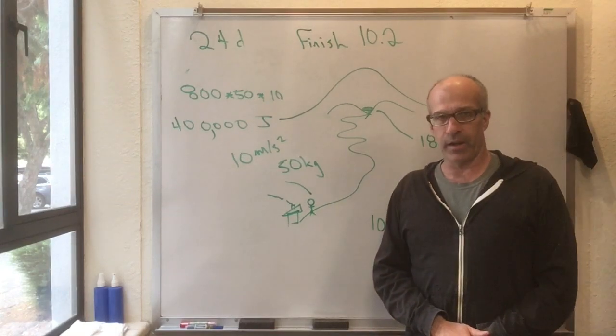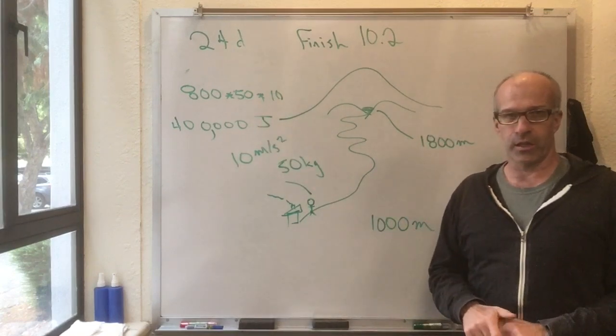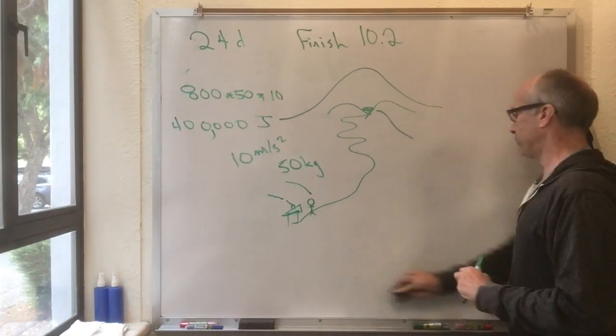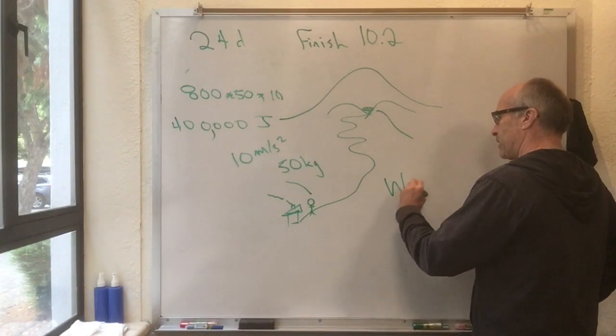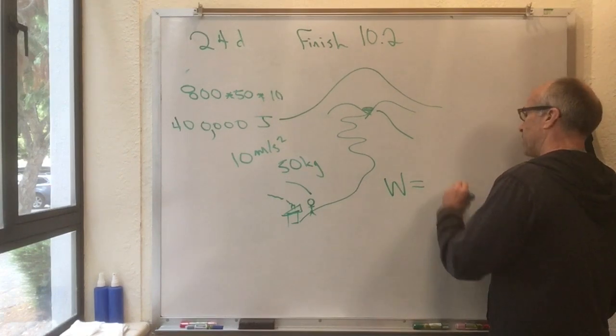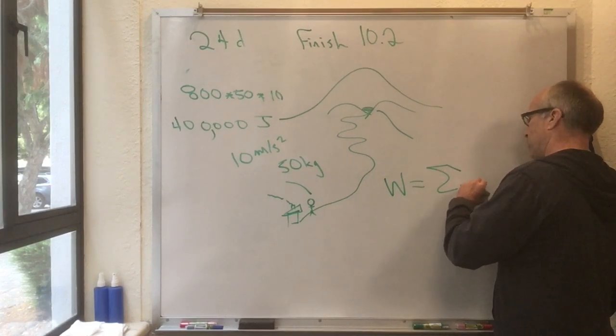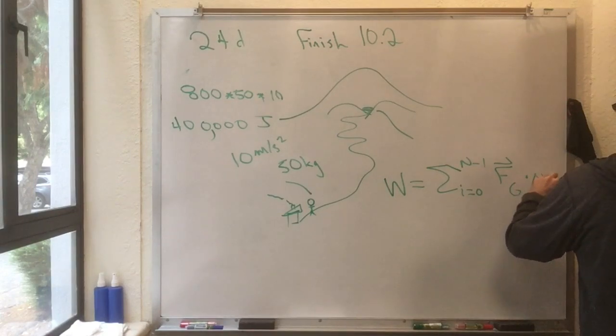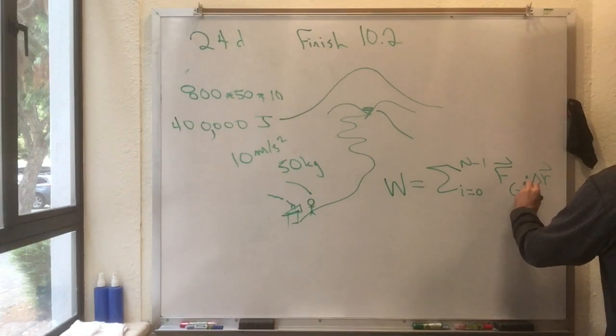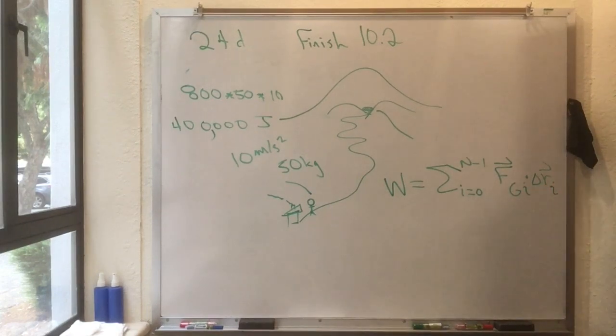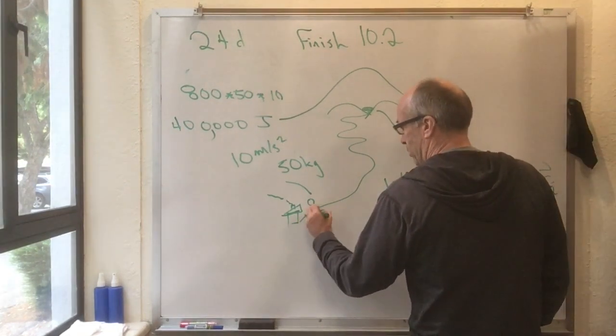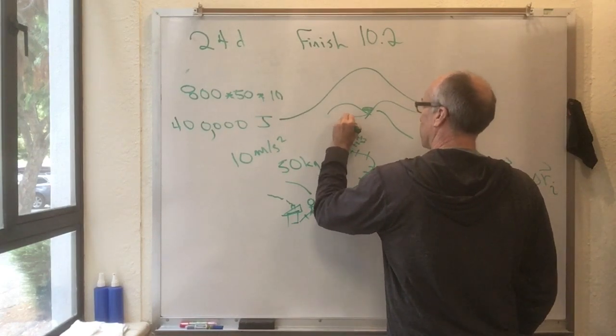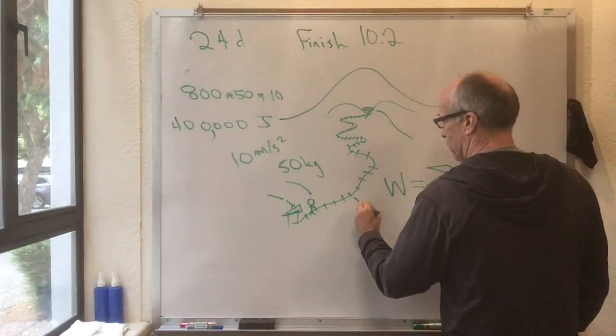And so the proof I gave that that's the change in that potential energy is not enough. So let's do a little better proof. Suppose I make the path a bunch of little tiny paths, which is actually the definition of the work. The work is the sum i equals 0 to n minus 1 of the force of gravity dot delta r.